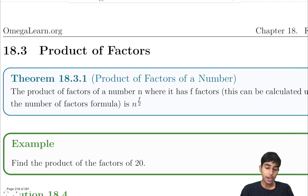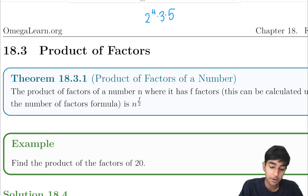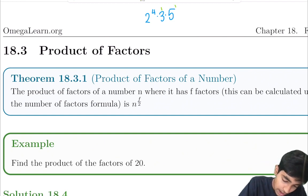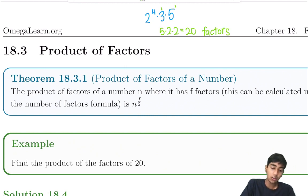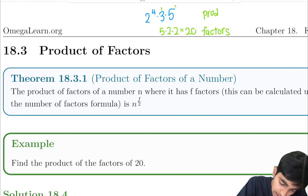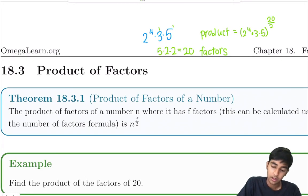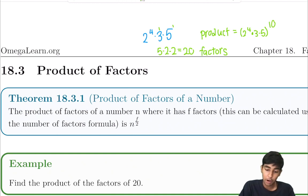Now let's learn the product of factors formula. Say we have 2 to the 4th times 3 times 5. First find the number of factors: 5 times 2 times 2 equals 20 factors. Then the product of all factors equals the original number raised to the power of (number of factors divided by 2). So it's (2⁴ × 3 × 5) to the power of 10. That's it.